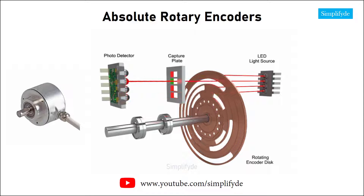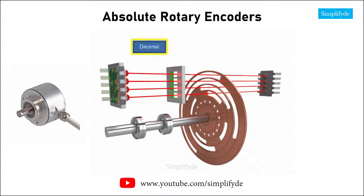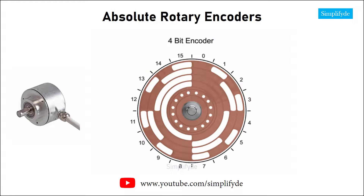The most common types of numerical encoding are decimal, binary, and gray code. In a four-bit encoder, there are 16 unique combinations, or numeric codes, every 22.5 degrees.